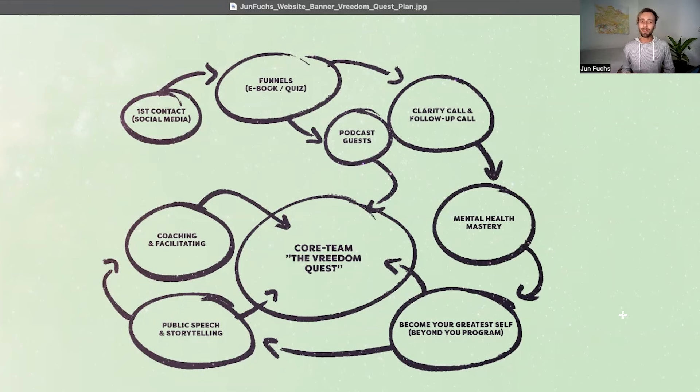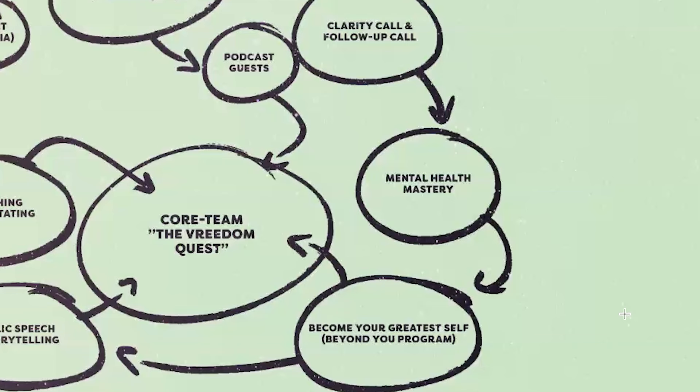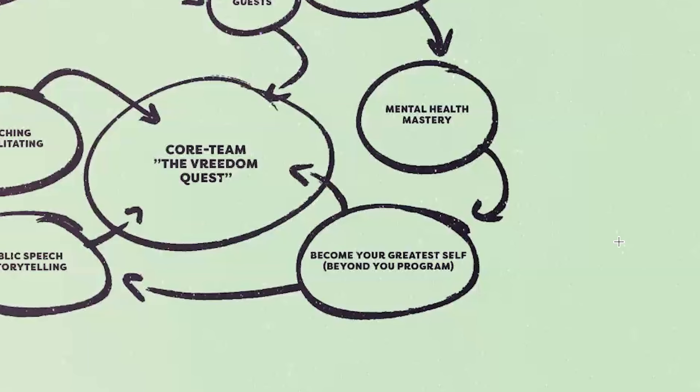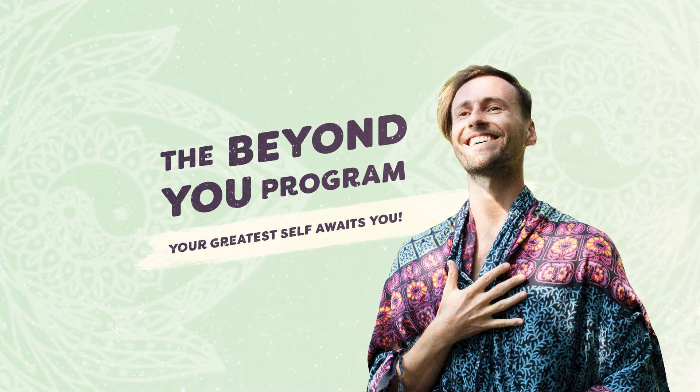The next step is for you to start working on three levels, which are displayed here on this graphic as well. Level number one is your mental health, because only if you're stable in your mind can you have big time impact in the world. Level two, which you see on the bottom right of this graphic, is called Become Your Greatest Self, a 12-week program called the Beyond You program.